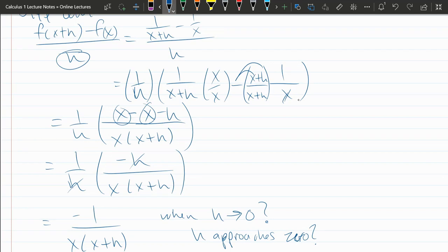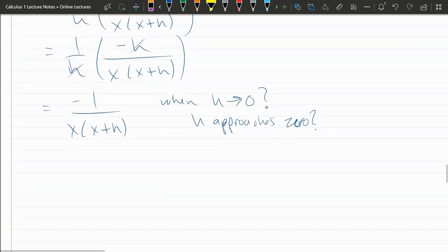You can't just say it's going to be really tiny here because it makes your fraction undefined. So you have to wait until you cancel it. And then you're allowed to think about when h approaches zero. So from here, when h approaches zero, we have negative one over x times x plus zero, which is negative one over x times x is x squared.